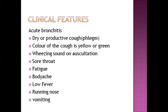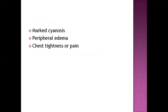Clinical features of acute bronchitis include dry or productive cough. At the beginning, the cough can be dry but eventually becomes productive. The color of the sputum can be yellow or green, indicating infectious cough. There is wheezing sound on auscultation, sore throat, fatigue, body ache, low fever, runny nose, and vomiting. There is also marked cyanosis, peripheral edema, and chest tightness or pain due to accumulation of fluid.